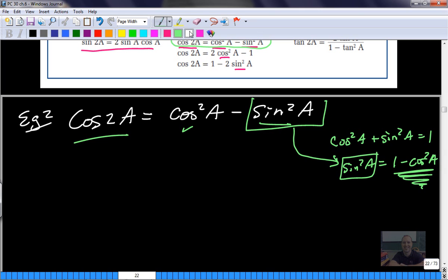And so this is sort of the beginning of proof. Cos of 2A equals cos squared A minus this right here. Minus 1 minus cos squared A.